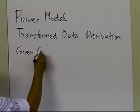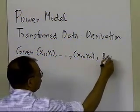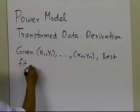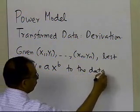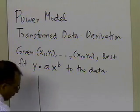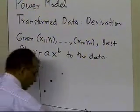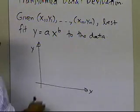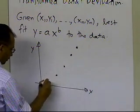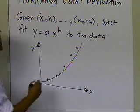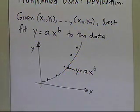So let's have a statement first. You're given (x1, y1) all the way up to (xn, yn), and what you want to do is best fit y = ax^b to the data. Somebody gives you data y versus x, and what they want you to do is regress it to a power model. The power model might look like y = ax^b — a nonlinear model best fitting those data points.